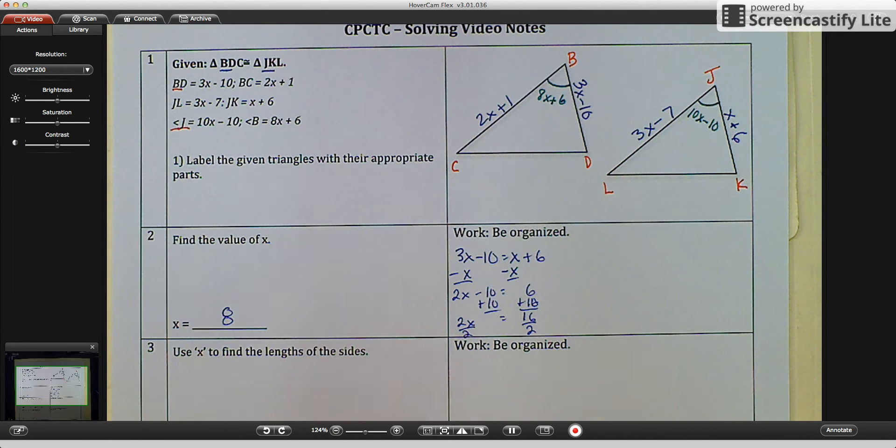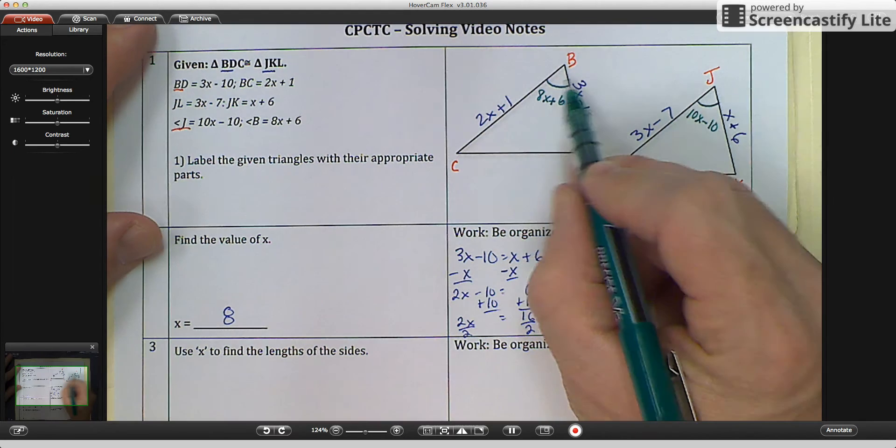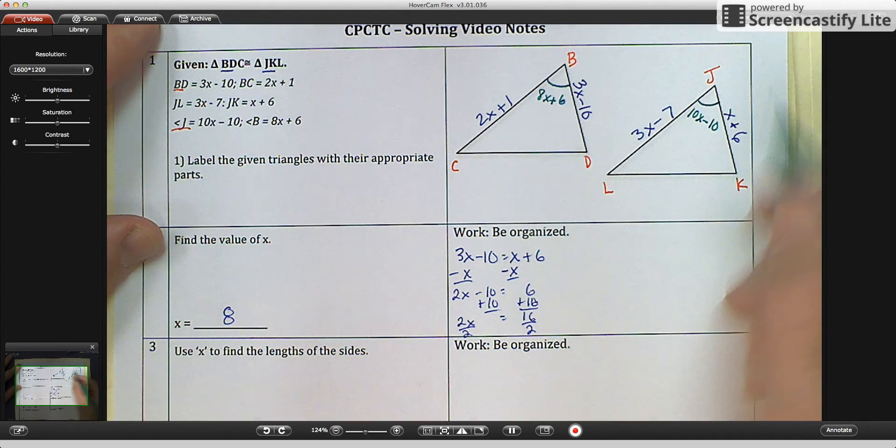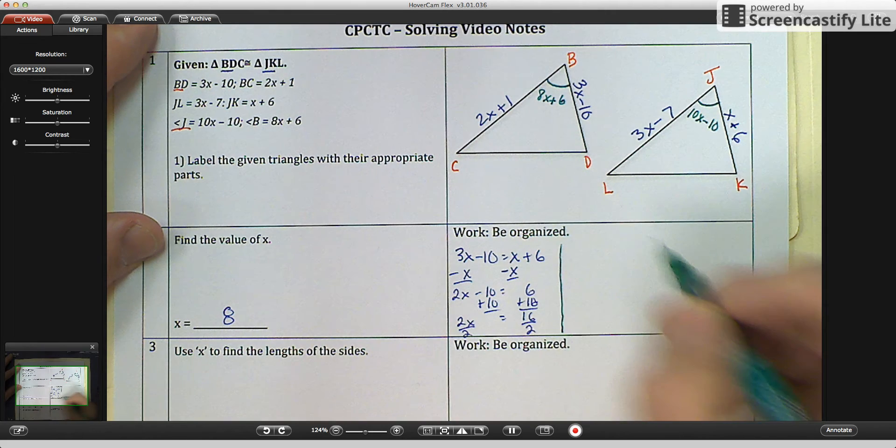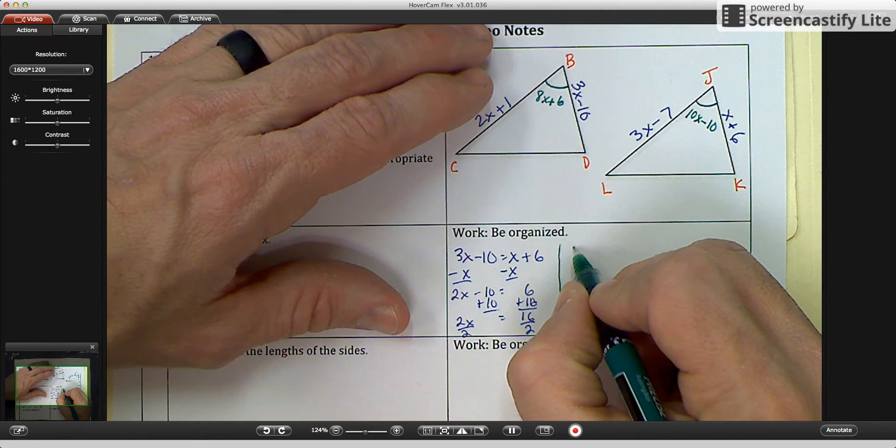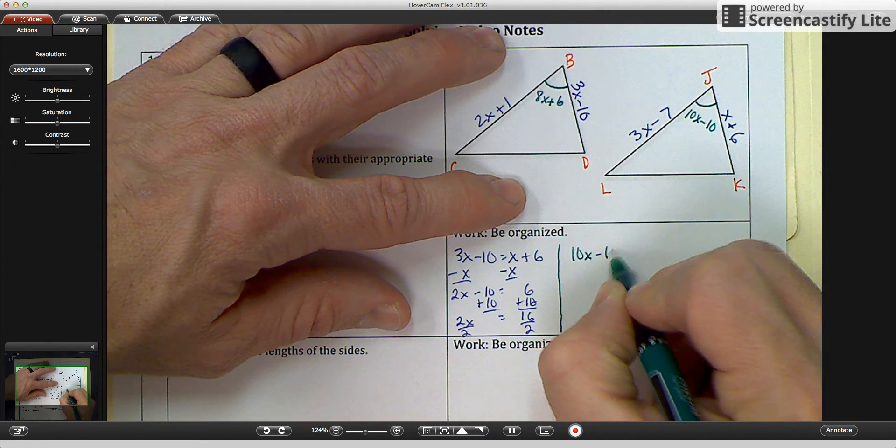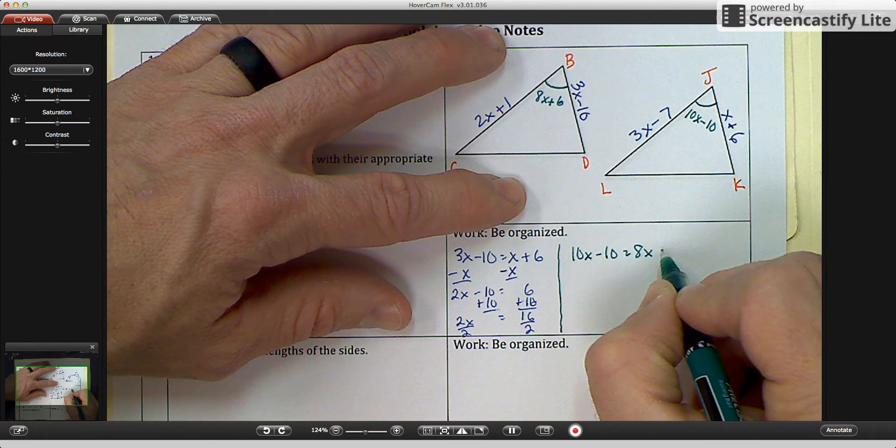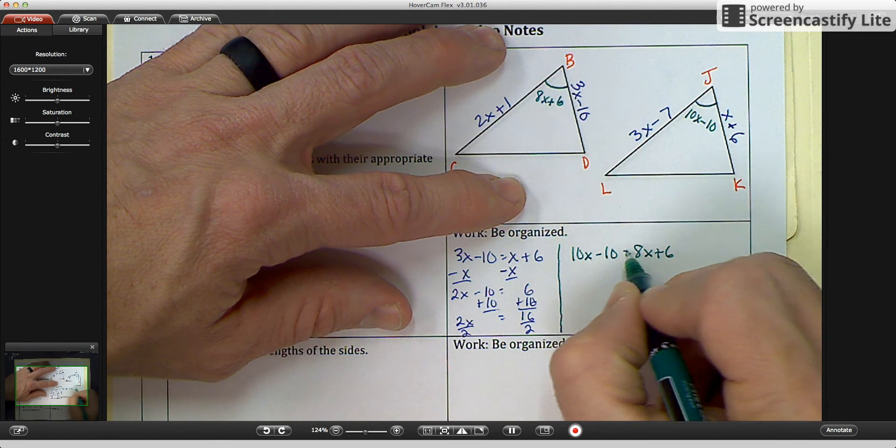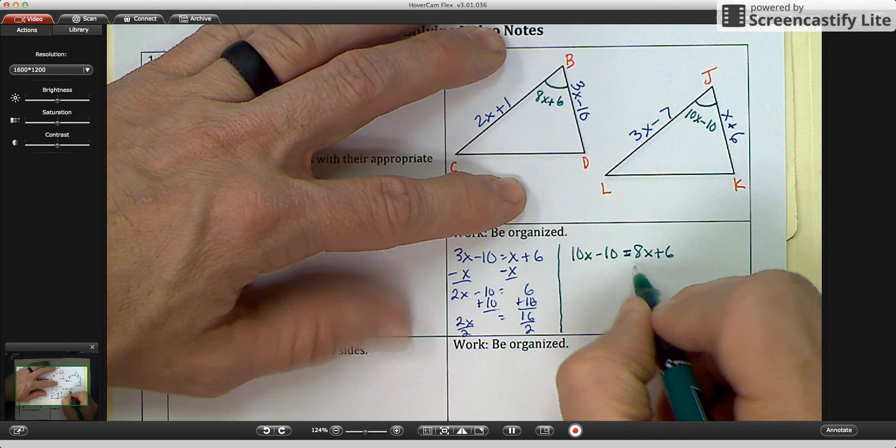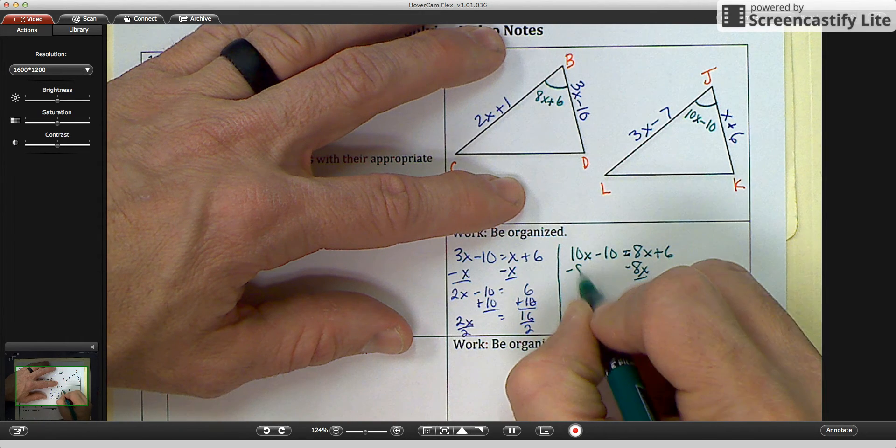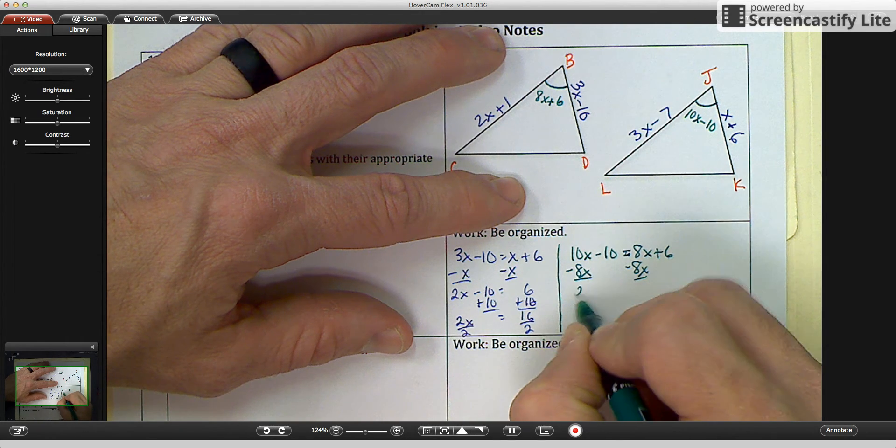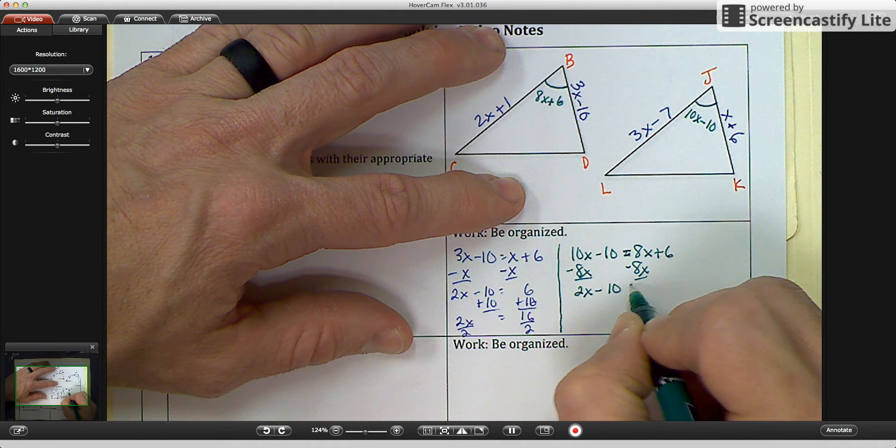That was one way. Another way that we could do it is we could look at the angles, and we could say that angle J and angle B are congruent, again, from our congruent statement. And we could create this equation. 10X minus 10 equals 8X plus 6.